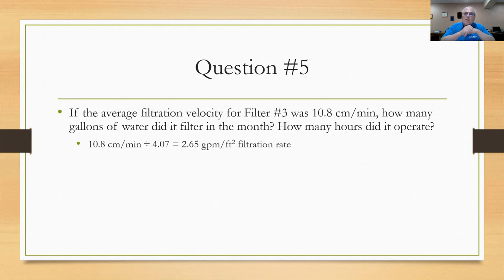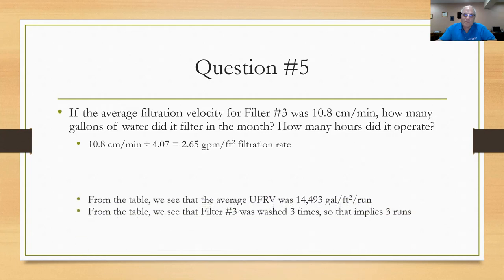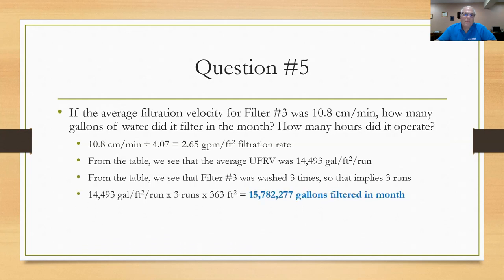Making the assumption of three filter runs: 14,493 gallons per square foot per run × 3 runs × 363 square feet = 15,782,277 gallons filtered in the month. That answers the first part — how many gallons did filter number three filter in the month, based on the assumption of three filter runs.